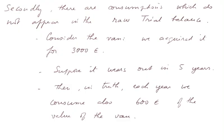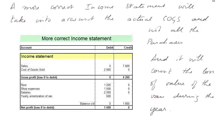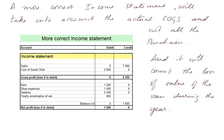Secondly, there are consumptions which do not appear in the raw trial balance. Consider the van: we acquired it for 3,000 euros, but this van will wear out over the years. Suppose it wears out in five years — then each year we also consume 600 euros of the van's value. So a more correct income statement will take into account the actual cost of goods sold, which is 2,800 and not all the purchases, and it will count the loss of value of the van during the year: 600.